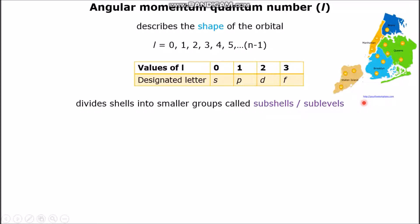There are more electrons in sub-shell F than sub-shell S because the F sub-shell has a larger L value. So the larger the L value, the more electrons are within its respective sub-shell.